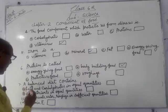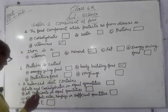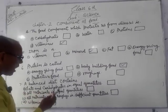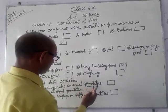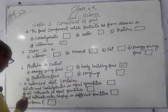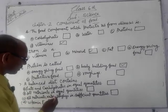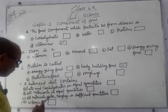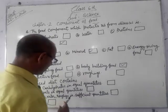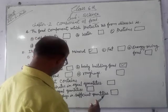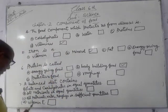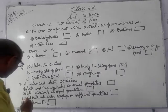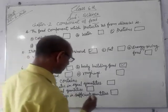Question number 7. A balanced diet contains. Option A: Fats and carbohydrates in equal quantities. Option B: All nutrients in equal quantities. Option C: All nutrients, water, and energy in sufficient quantities. Option D: Vitamin A. The correct option is C.